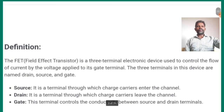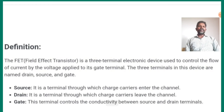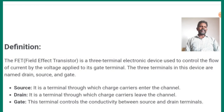So what is the definition of FET? The FET, field effect transistor, is a three terminal electronic device used to control the flow of current by the voltage applied at its gate terminal. The three terminals in this device are named drain, source, and gate.